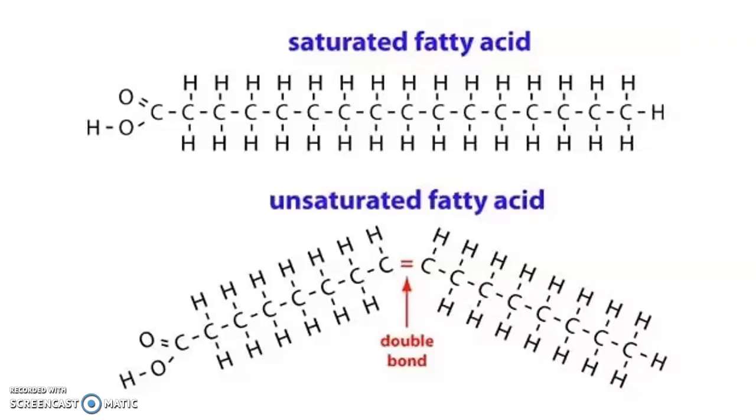With unsaturated fatty acids, you have a double bond between one or more carbons. Because you have a double bond, there's four bonds between those carbons. Whenever you have a saturated fatty acid, that's a straight line—they line up really tight and are solid at room temperature, whereas unsaturated fatty acids, like a plant source, are liquid at room temperature because all those kinks don't allow them to lay flat on each other.